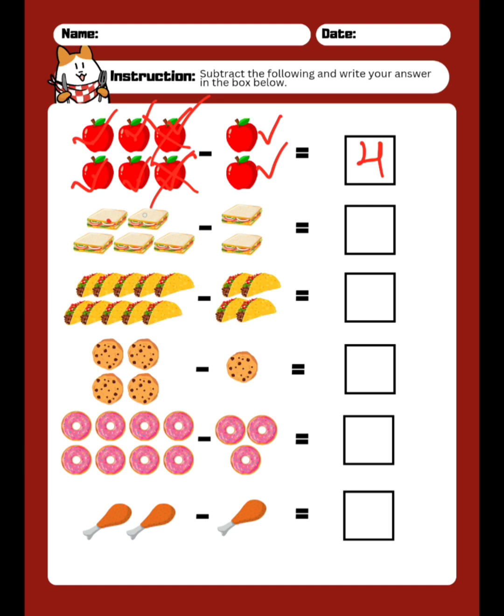Now how many? 1, 2, 3, 4, 5 minus 2. So how many sandwiches you are going to cross out? 2 sandwiches. How many left? 3. So 5 minus 2 equals 3.